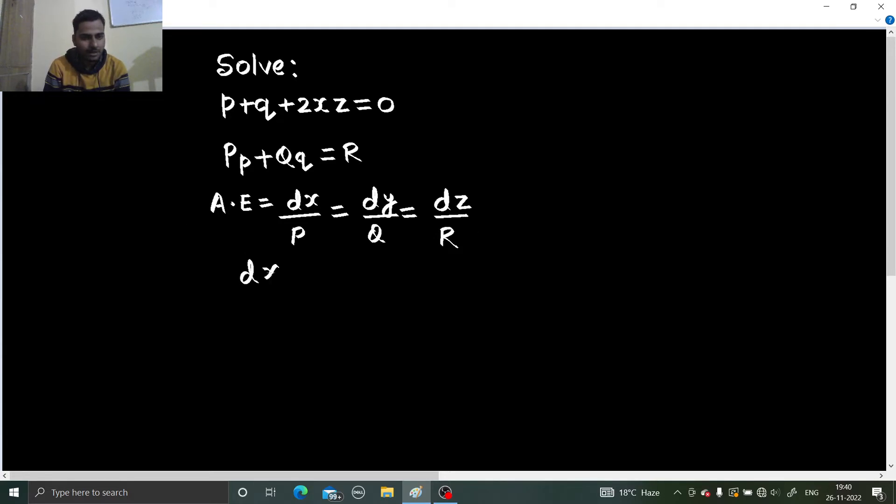Let us write our auxiliary equation. Your P is the coefficient of small p which is 1 here. Similarly, your coefficient of small q is also 1 and if you look at this carefully r is on the right hand side. So you can write this as p plus q equals to minus 2xz.